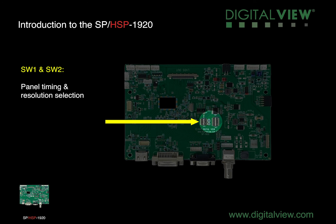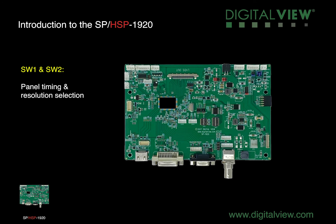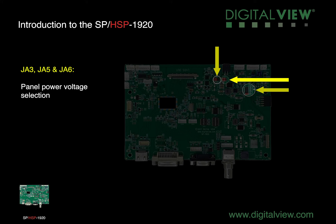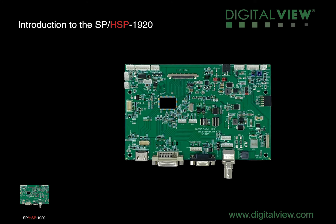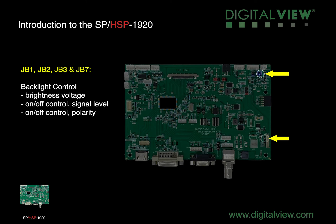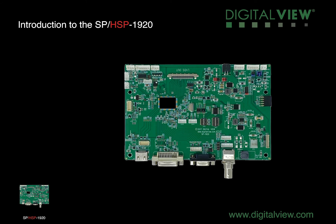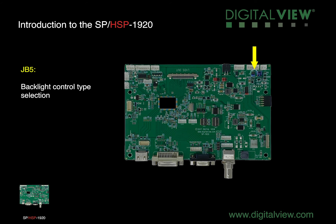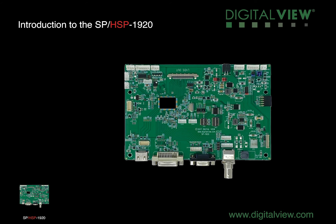SW1 and SW2 are for the panel timing and resolution selection. JA3, JA5, JA6 are for the panel power voltage selection. JB1, JB2, JB3 and JB7 are all for the control of the backlight settings. JB5 is the backlight control type selection. And finally JP6 is for the input power control.